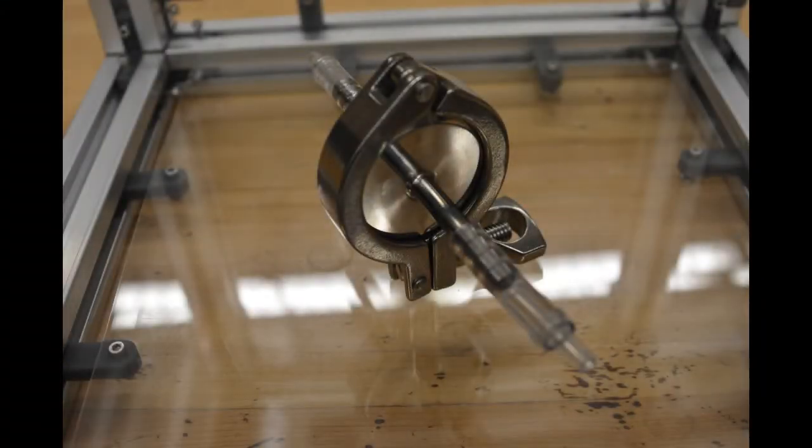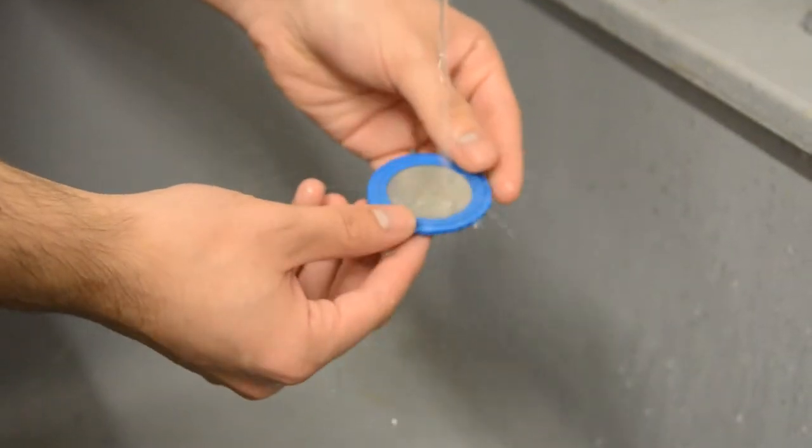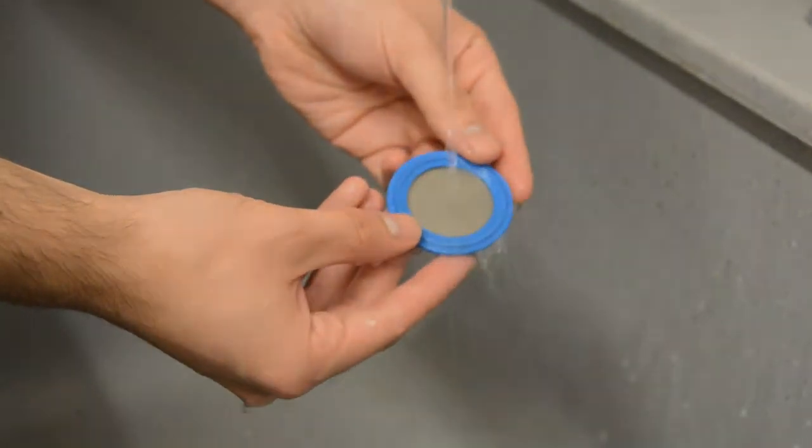The last thing the water flows through is the OSIS filter. This removes microscopic particles. Our OSIS filter is reusable. Just remove it from its frame, rinse it in clean water, and it's good to go.